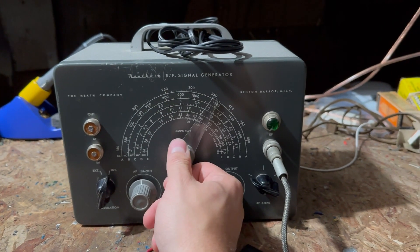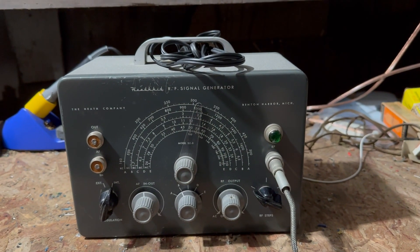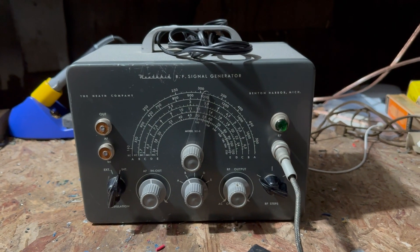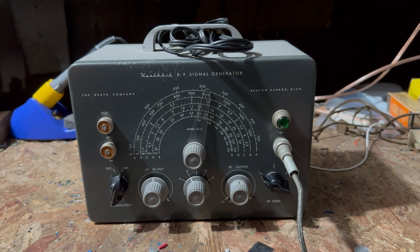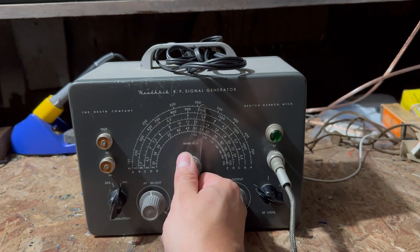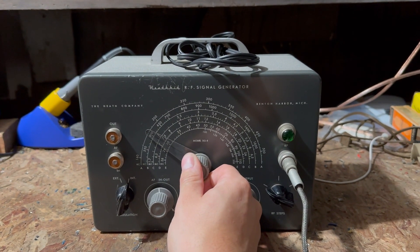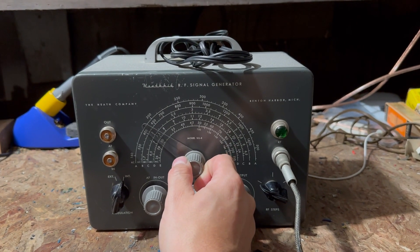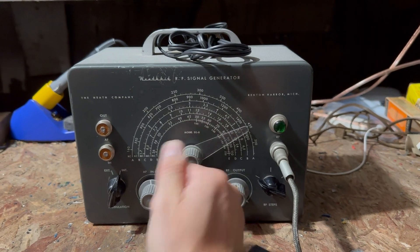If you put in a signal of, I don't know, a thousand kilohertz and you tune the radio to a thousand, you'll hear a little bit of a whistle or a tone. If you set the thing over to 600, same deal.